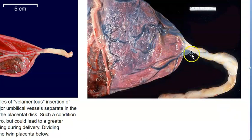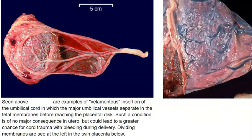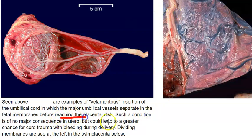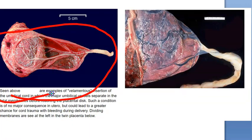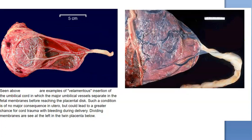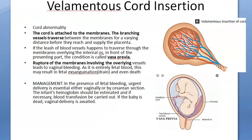These are examples of velamentous insertion of the umbilical cord, in which major umbilical vessels separate in the fetal membranes before reaching the placental disc. Such a condition is of no major consequence in utero, but it could lead to a great chance of cord trauma with bleeding during delivery. In summary, the fetal membranes separate inside before reaching the placental disc — which is not the normal arrangement.